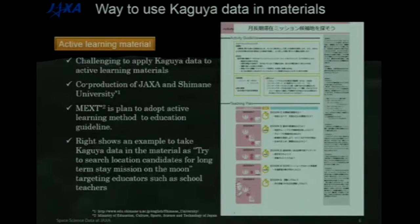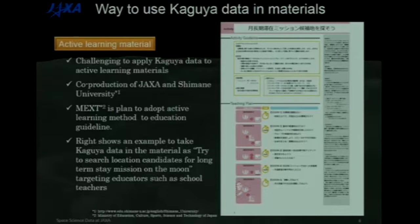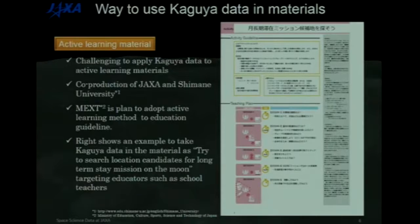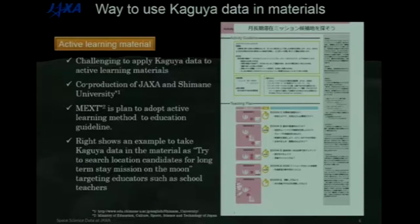From this point, let me introduce the way to use Kaguya data in education materials. The first item is for teachers. Active learning — a method being promoted within the educational community in Japan — is being adopted into education guidelines by the relevant Japanese government ministry. JAXA collaborated with Shimane University and developed a challenging active learning material with Kaguya data, designed to show teachers how to teach active learning.